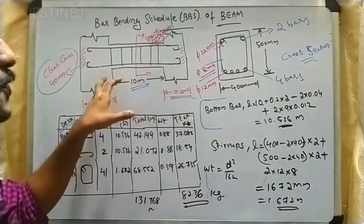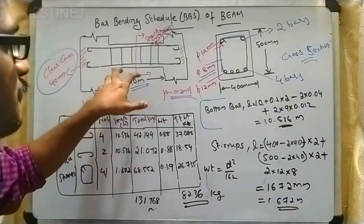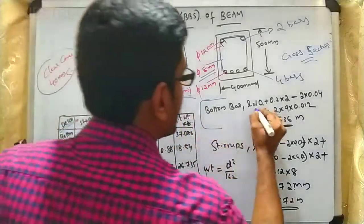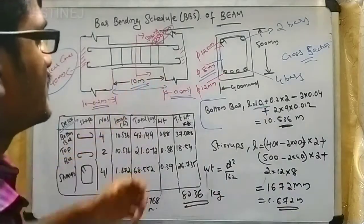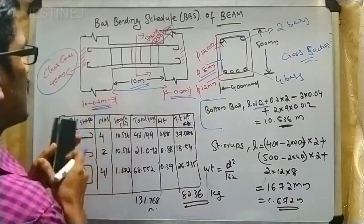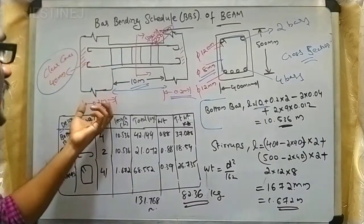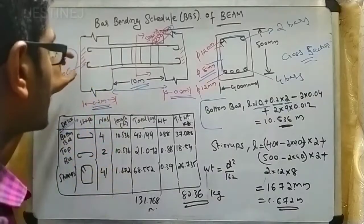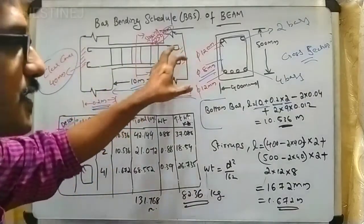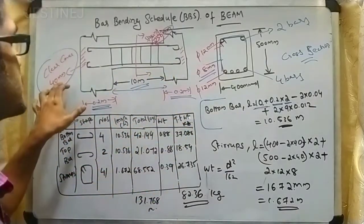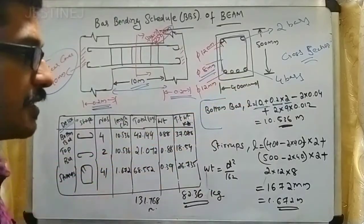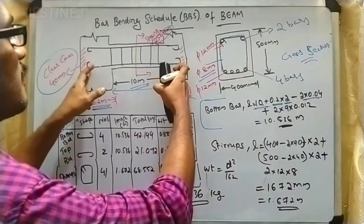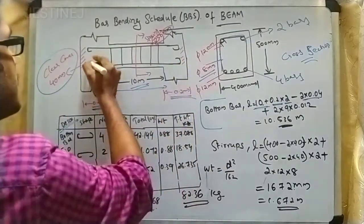We will move on to our first case, which is the bottom bar. For the bottom bar, the span distance is 10 meters. At both ends there is a column, and the reinforcement extends into the column, so you add 0.2 multiplied by 2 for both sides. However, a clear cover is provided to both sides, so you deduct 2 multiplied by 0.04 meters.